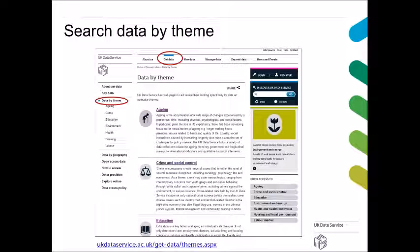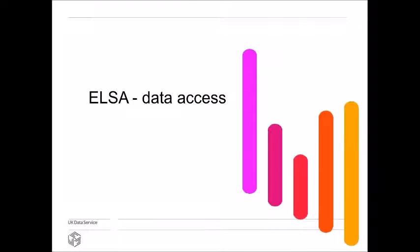The third option is to search by theme. Again, you would select Get Data, and then on the left-hand side, Data by Theme. You can see we have a couple of themes, and one is Aging. You would click on it, and there would be a table with relevant data sources, one of which would be the ELSA data.